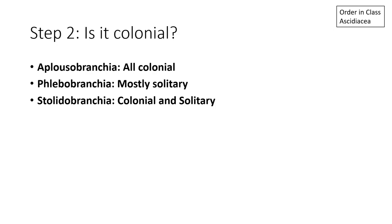What if you have a colonial animal? We've figured out for a solitary animal how to tell whether you have a Stolidobranch or a Phlebobranch, but what if it's colonial? You have all three options. In Aplusobranchia, they're all colonial. In Phlebobranchia, they're mostly solitary but there are colonial genera. And in Stolidobranchia, we have both colonial and solitary species.